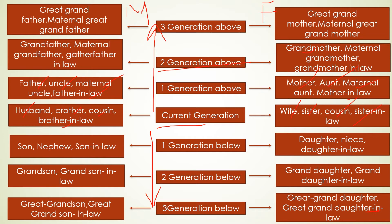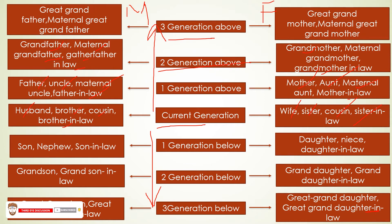In the second generation, females include: grandmother, maternal grandmother, and grandmother-in-law. On the male side: grandfather, maternal grandfather, and grandfather-in-law. In the third generation, females include: great-grandmother and maternal great-grandmother. On the male side: great-grandfather and maternal great-grandfather.